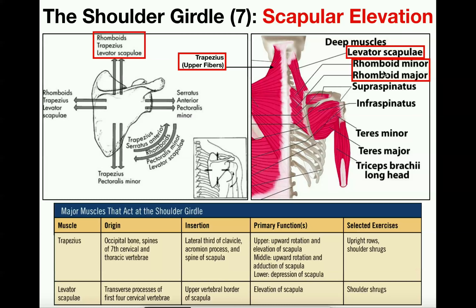The most minor contributors are the rhomboids. The rhomboids are involved mainly in retraction because of how they attach on the scapula and because their angle is mostly horizontal. But because they run at an angle, there is a small vertical component, so the rhomboids can play some role in elevation — but not a lot. So when you do shrugs, you're mainly working the trapezius and levator scapulae. If you really want to work the rhomboids, you should do something like rows to force scapular retraction.